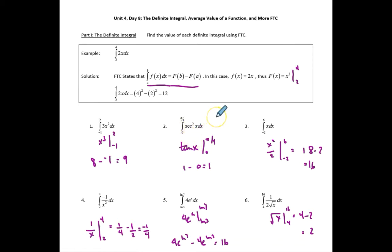Secant squared, as we have memorized by now, integrates to tangent x. And so I'm evaluating tangent first at pi over 4, which is 1, and then at 0, which is 0. So this answer is 1.